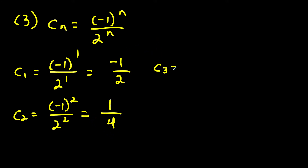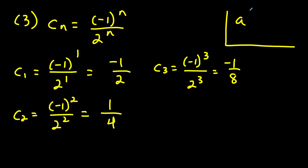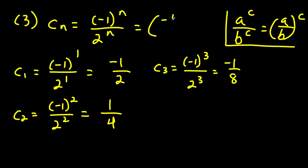The third term is negative one to the third over two to the third, which equals negative one over eight. Notice each term is found by multiplying the previous one by negative one half. There's a nice algebra property: a to the c over b to the c equals (a/b) to the c. So we can rewrite c sub n as just negative one half in parentheses to the n power.